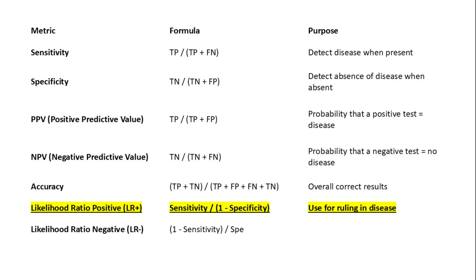Now for likelihood ratios, which help us interpret diagnostic tests independent of prevalence. The positive likelihood ratio, or LR+, is calculated as sensitivity divided by 1 minus specificity. It tells us how much the odds of the disease increase when a test is positive.